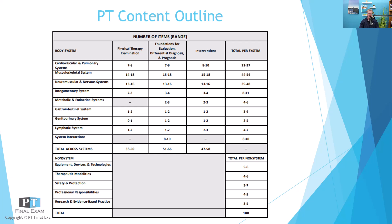Today's episode covers therapeutic modalities, part of the broader non-systems portion of the exam. On test day you can expect a good number of non-systems questions, though not as many as the main three — cardiopulmonary, musculoskeletal, and neuro. Expect roughly five to six questions on equipment, devices, and technology; four to six on therapeutic modalities; five to seven on safety and protection; four to five on professional responsibilities; and three to five on research and evidence-based practice — about 25 non-systems questions total.